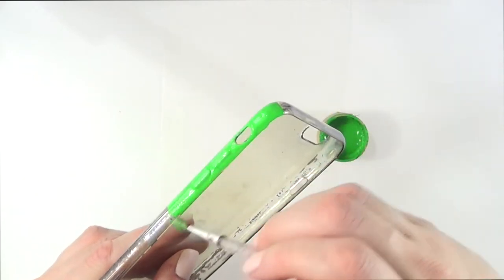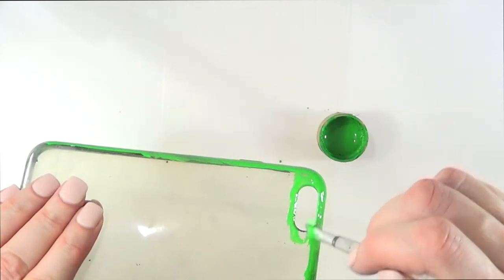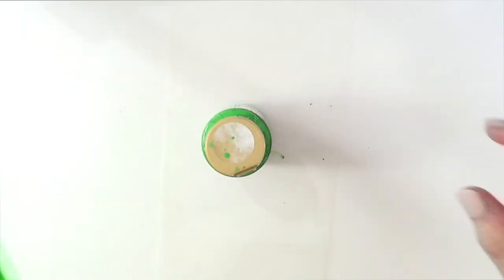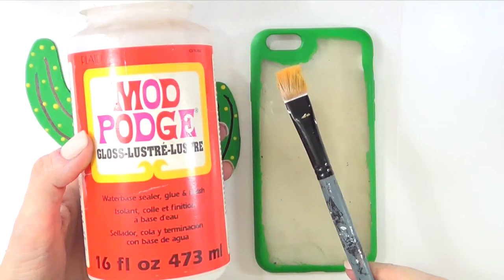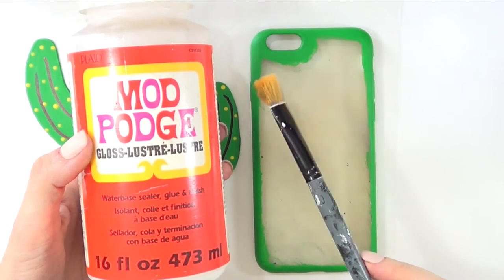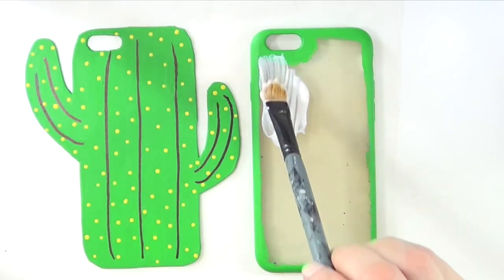I'm just going to be painting just the edges with my green acrylic paint and just the front part, anything that is going to be visible. I'm going to be letting this dry on top of a bottle of paint.